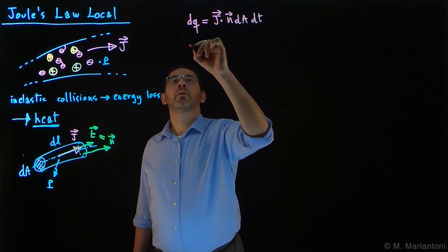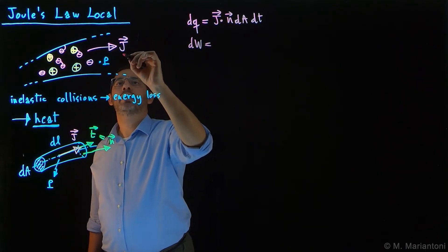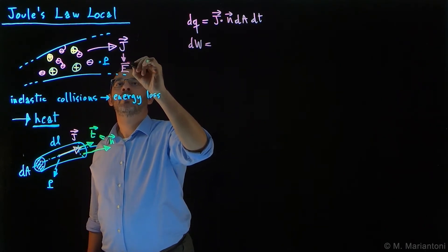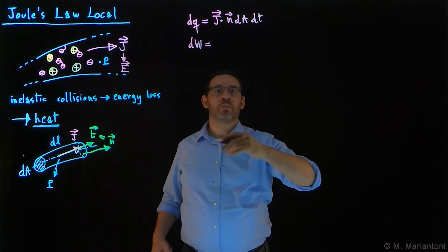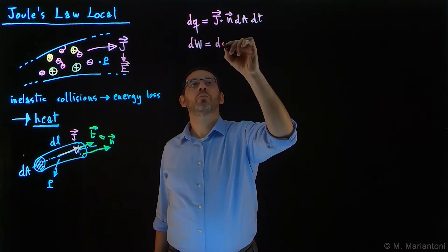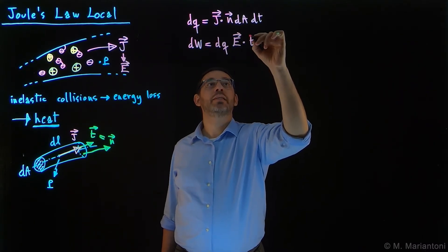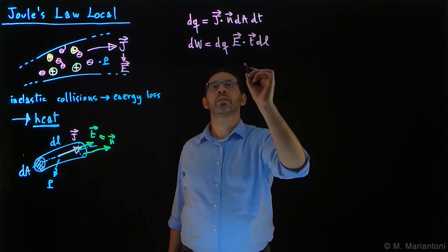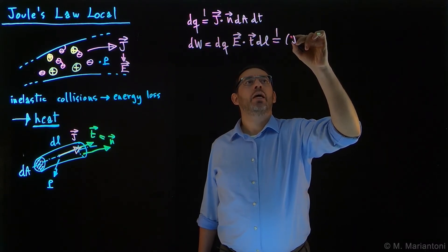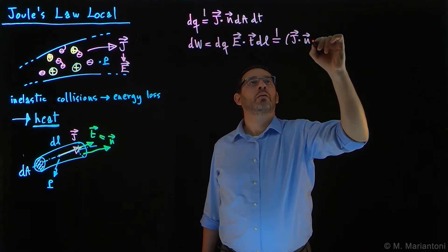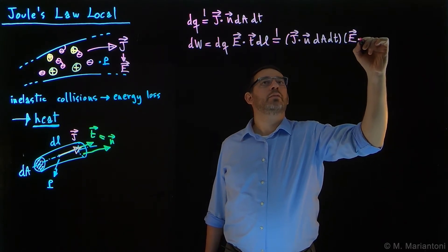So what is the work dw that the electric field—we know if there is a j, there must be an electric field E, for example disaggregated by Ohm's Law, as we've seen in a previous video—what is the work that E does to move this charge dq by a certain length dL? Well, it's nothing but dq times E·dL vector, which is t dl, using these conventions here. And so this we can rewrite it using this definition of dq as j·n dA dt times E·t dl.